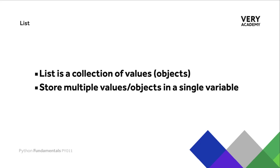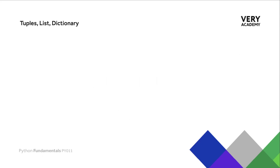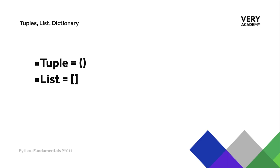To summarize: the list data type is a collection of values or objects that allows us to store multiple values in a single variable. Lists are created using square brackets. To distinguish the three popular collection types — tuples use parentheses, lists use square brackets, and dictionaries use curly braces.